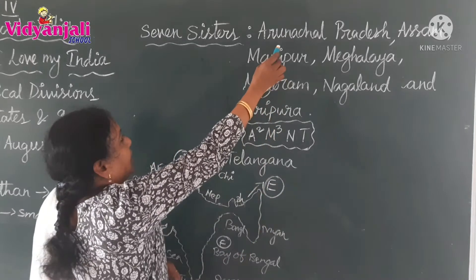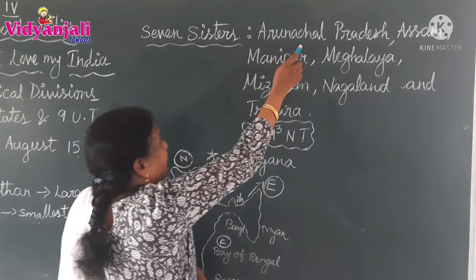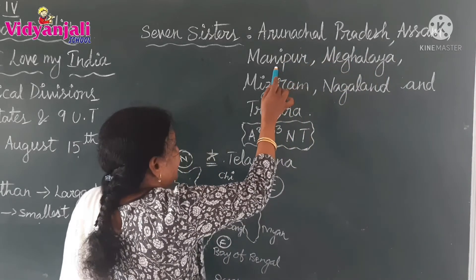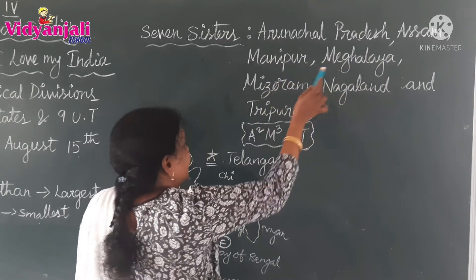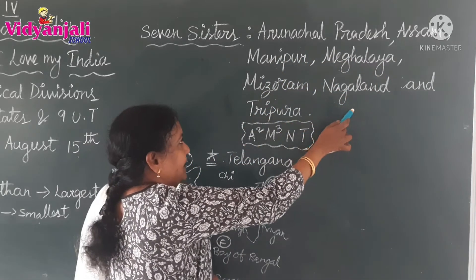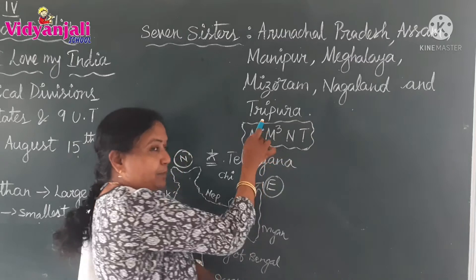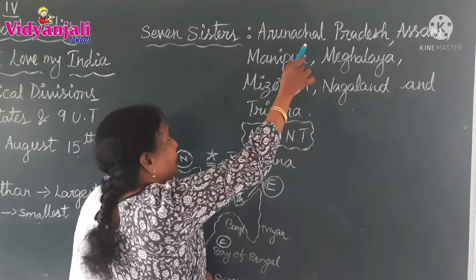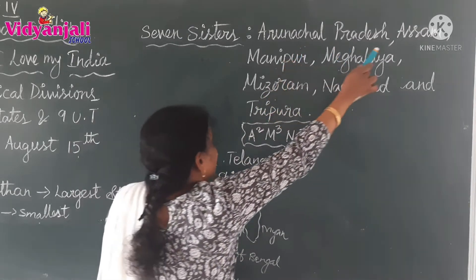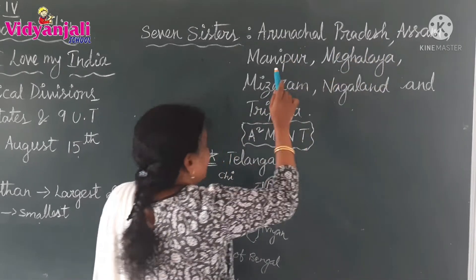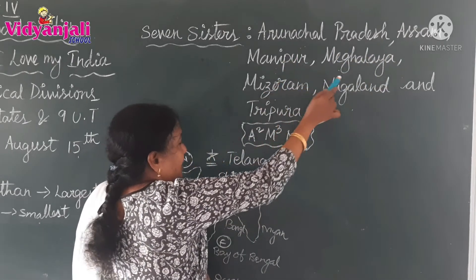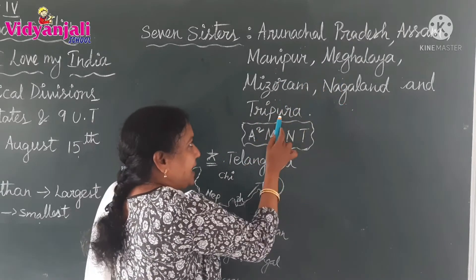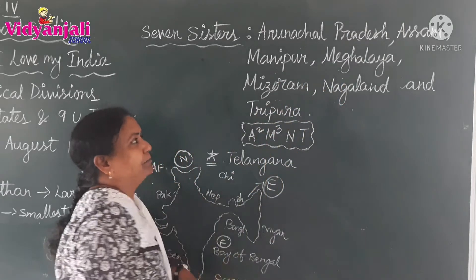What are the seven states? Arunachal Pradesh, Assam, Manipur, Meghalaya, Mizoram, Nagaland, and Tripura. Once again, children: Arunachal Pradesh, Assam, Manipur, Meghalaya, Mizoram, Nagaland, and Tripura.